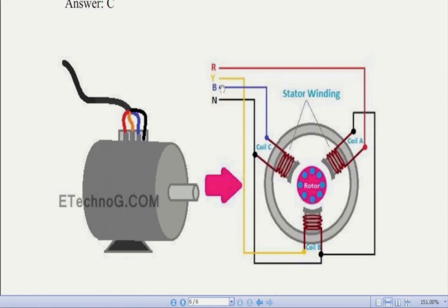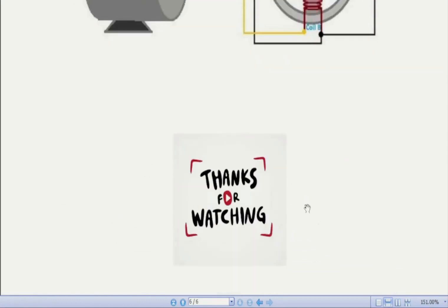The stator consists of three-phase winding: R, Y, B — red, yellow, and blue — and it is connected to the power supply. The rotor is free to rotate and it is also short-circuited; it is not connected physically to any part of the stator. The rotor is made to rotate due to the induced effect of the stator. The induction motor is based on the same principle as a transformer — mutual induction — but the only difference is that an induction motor is a rotating machine while a transformer is a static machine.